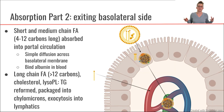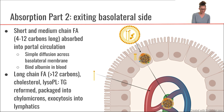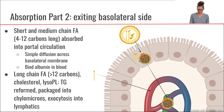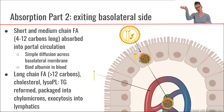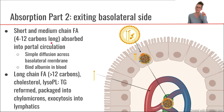Now let's move to part two of absorption. We've absorbed across the luminal side; now we need to get across the basolateral side to actually enter the body. For the short and medium chain fatty acids — those 4 to 12 carbons long — they will just directly diffuse across the basolateral side and go directly into the portal circulation, straight into the blood and to the liver first. But these represent a very small proportion of the dietary fat we consume.